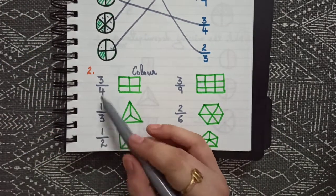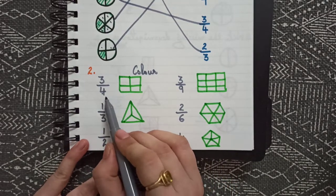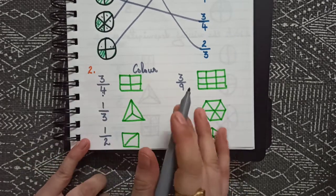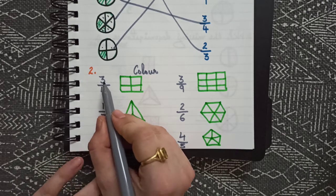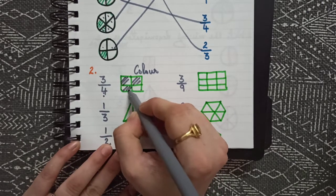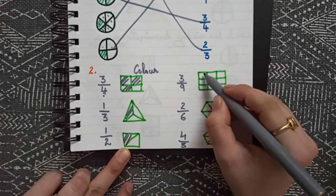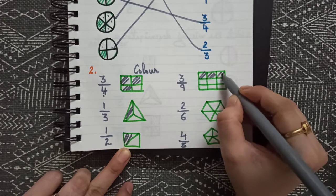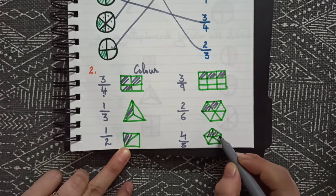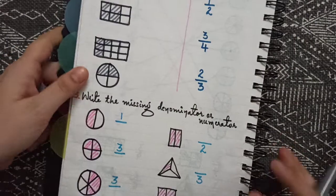Another activity could be coloring. We give kids the fractions and they have to color. For three by four — denominator is four, so that many parts remain, and numerator is three so we shade three. So this is three by four. Similarly: one by three, one by two, three by nine, two by six, four by five.